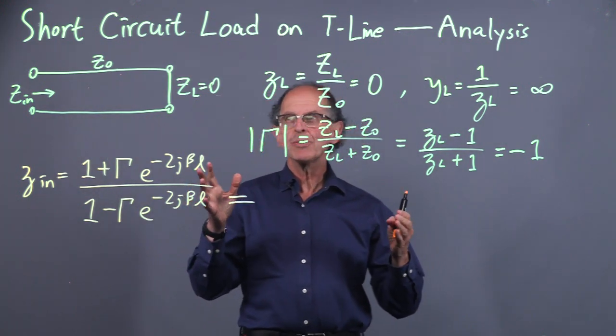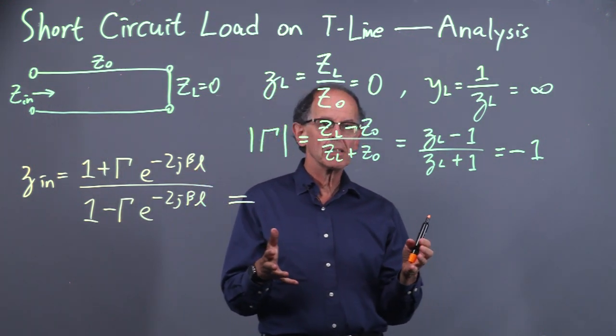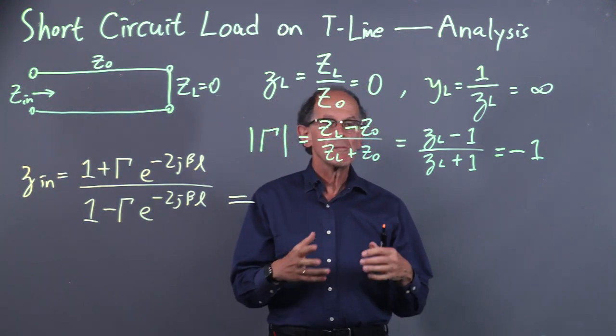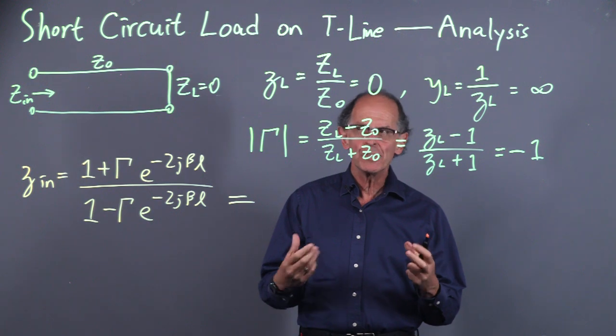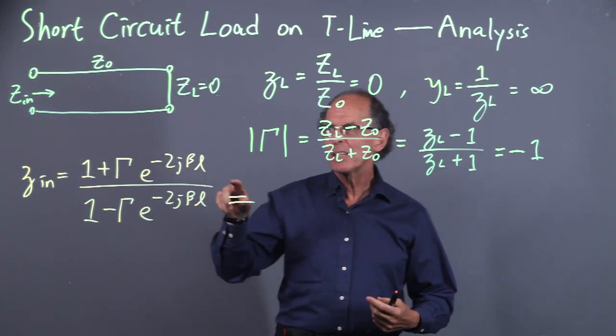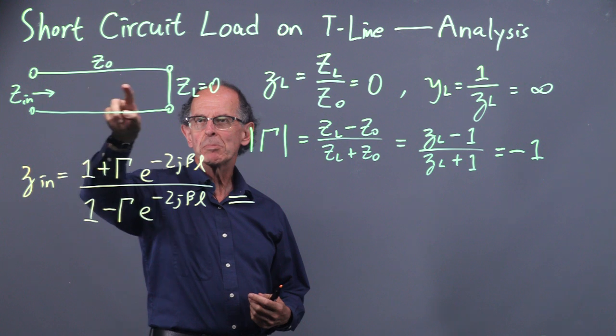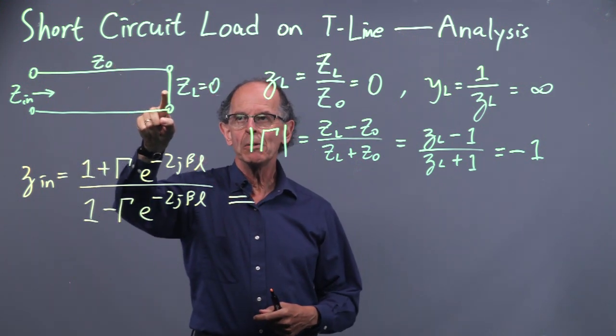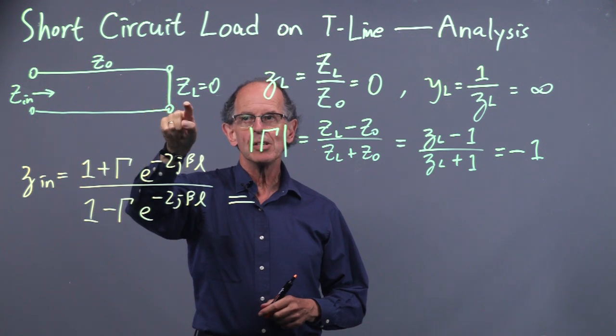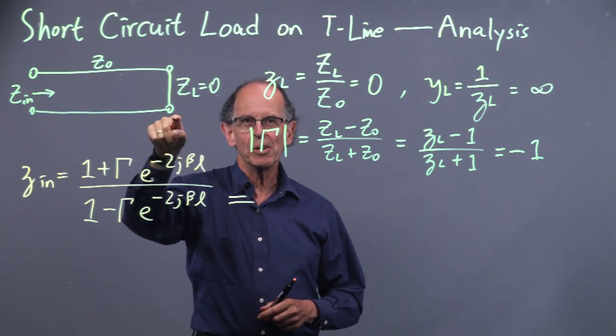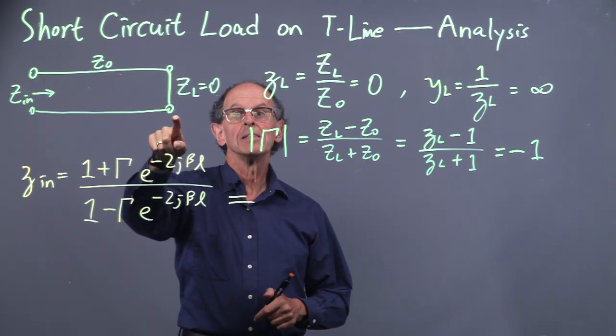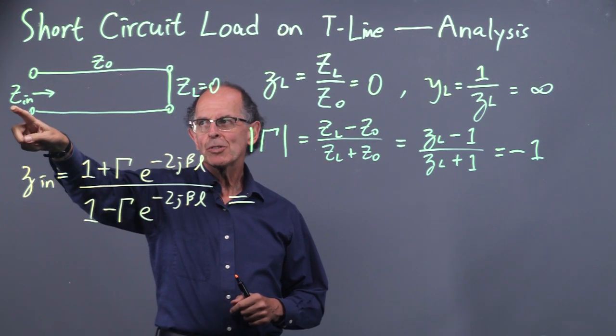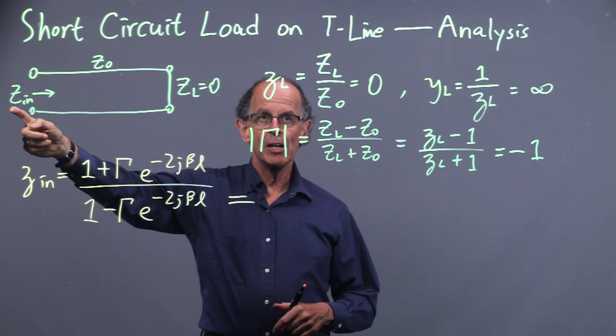Welcome to our analysis of a short circuit load on a transmission line, modeled by a piece of line that's just shorted. We have the transmission line characteristic impedance Z naught, and the load is ideally zero, a dead short. There's the input impedance looking in, and that's not normalized.